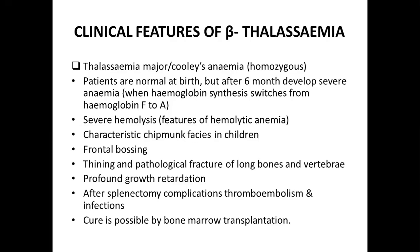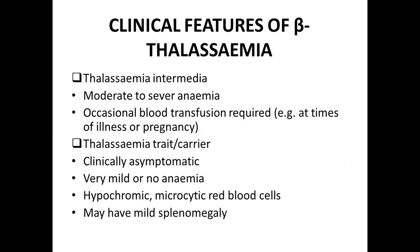In case of thalassemia major, the only cure is bone marrow transplantation, and these patients are blood transfusion dependent. In intermediate thalassemia there is moderate to severe anemia and they need blood transfusion especially at the time of illness and pregnancy. Thalassemia minor are the carriers — these are clinically asymptomatic.